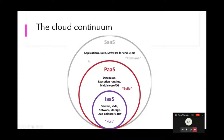If we work from the inside out: Infrastructure as a Service is where your provider gives you servers, network, storage, load balancers, and any other type of hardware. You would typically use IaaS to host things that you've built.